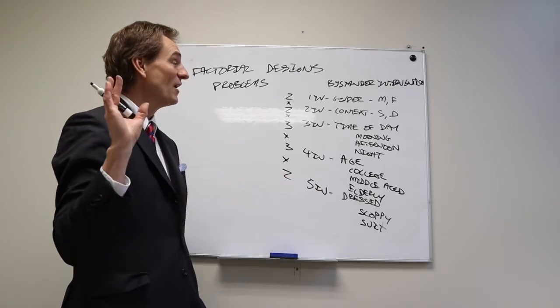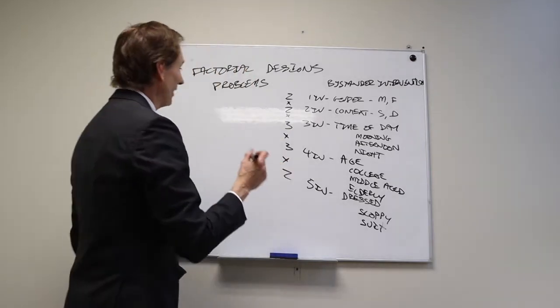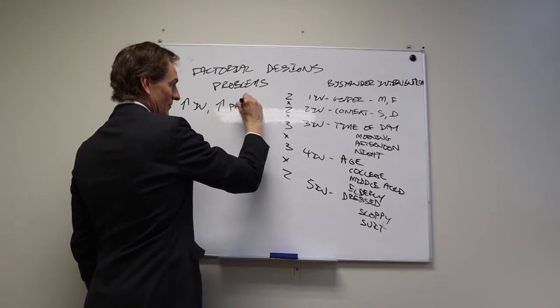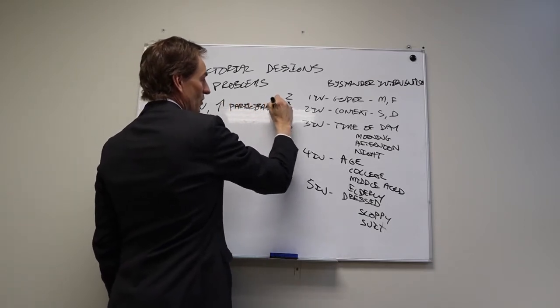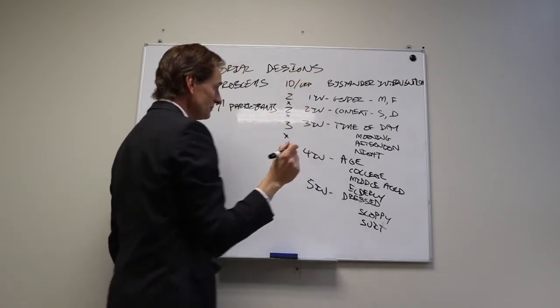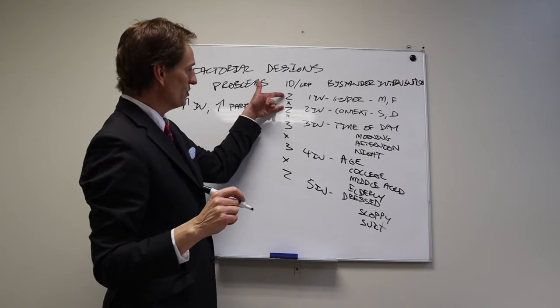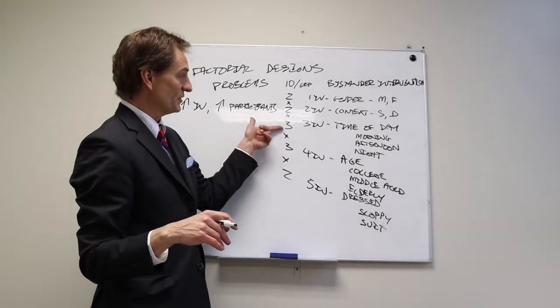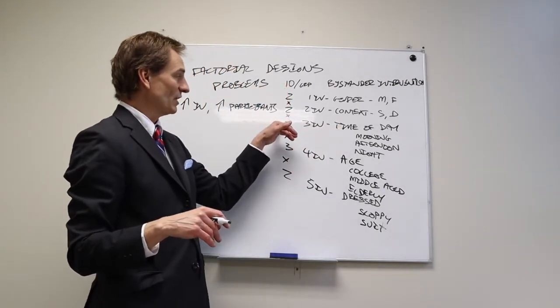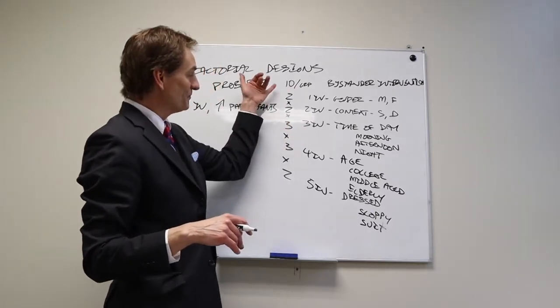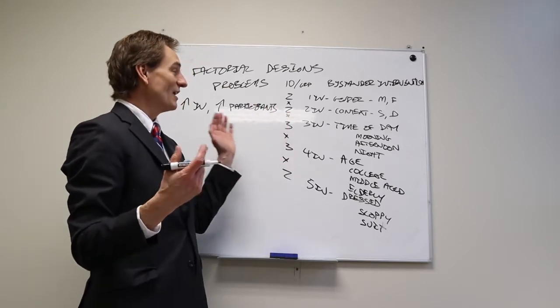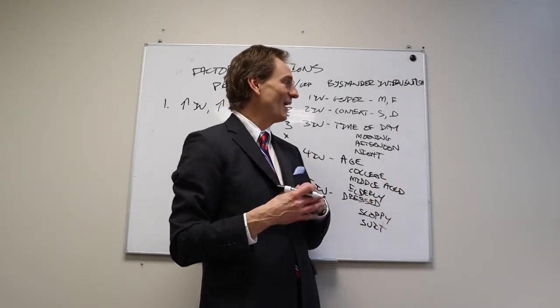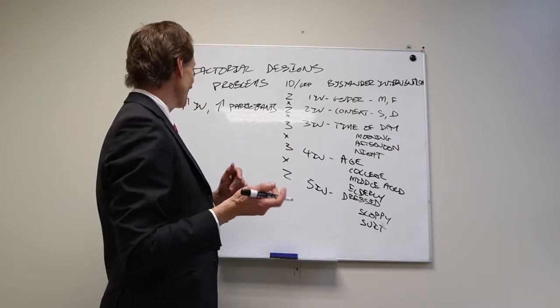Here's the problems. The first is the more independent variables you have, the more participants you need. Let's say we have ten people per group. A two by two study needs forty people. If I add the third independent variable, time of day, now I'm up to 120 people that I need. It keeps going up and up.